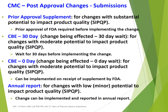There are four types of post-approval CMC change submissions. First, Prior Approval Supplements are for changes with substantial potential to impact product quality, strength, identity, potency, quality, and purity — prior FDA approval is required before implementing such changes. Second, CBE-30 (Change Being Effected, 30-day wait) is for changes with moderate potential to impact product quality — one must wait 30 days after submitting the change details to FDA, during which FDA evaluates the changes; if there are no concerns after 30 days, the changes may be implemented.